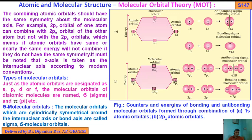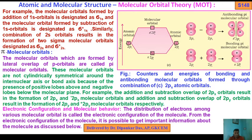The third condition is that combining atomic orbitals should have the same symmetry. The molecular orbital formed by addition of 1s orbital is designated as sigma 1s, and the molecular orbital formed by subtraction of 1s orbital is designated as sigma star 1s. Similarly, the combination of 2s orbitals results in the formation of sigma 2s and sigma star 2s molecular orbitals. Star means antibonding and sigma alone means bonding MO.